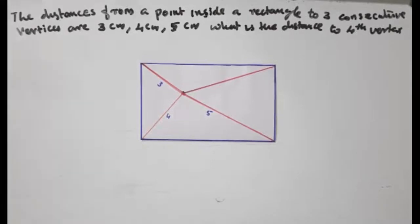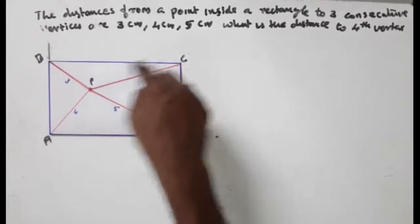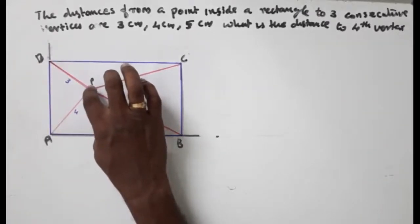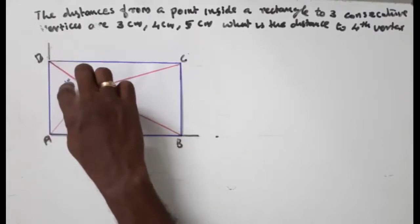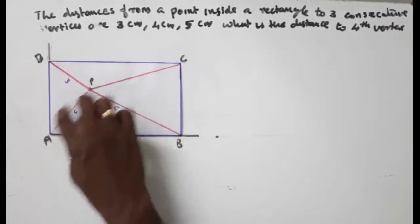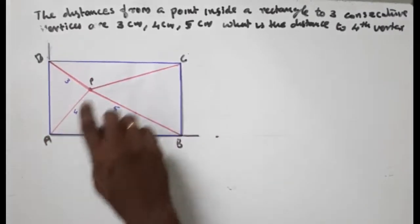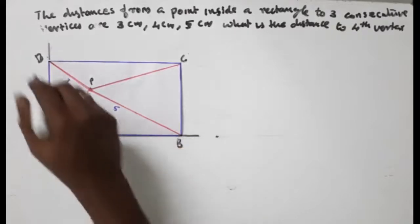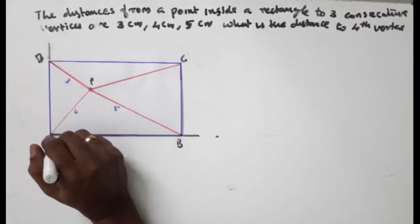We are going to draw a rectangle. Inside the rectangle there is a point P. The distance from P to one vertex D is 3, P to another vertex is 4, P to another vertex is 5, and we need to find the remaining distance from P to the last vertex.